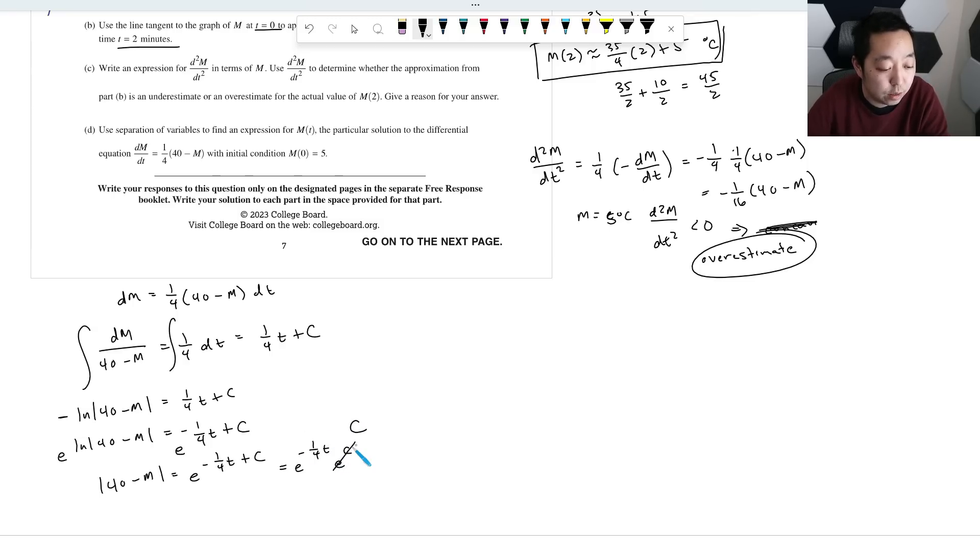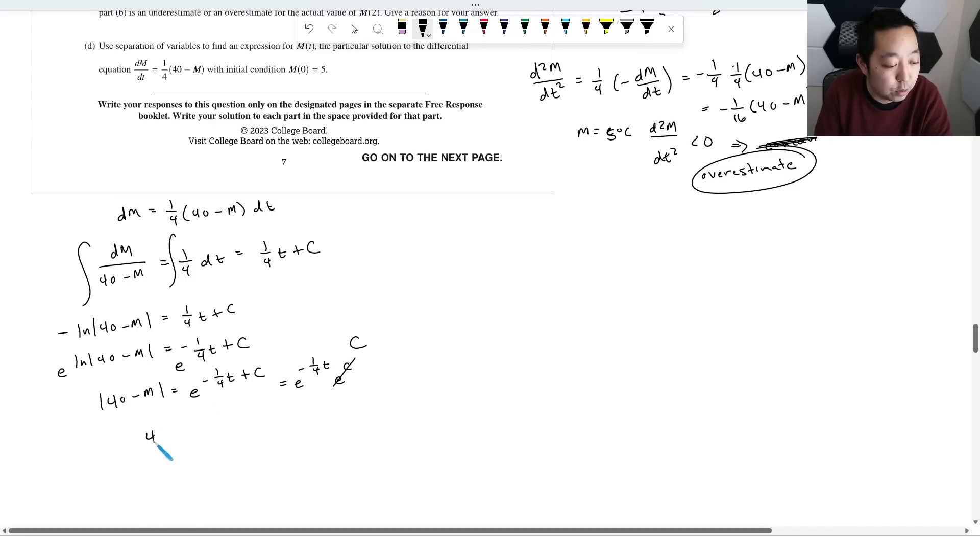Then you can write that as E to the negative one quarter T times E to the C. E to the C is an arbitrary constant. You can make that C. If you make C positive or negative, it allows you to remove the absolute value of the sign because now you can say C is negative. That will include both possibilities. So it'd be C E to the negative one quarter T. And so then you can solve for M. It's M is, move it over, it'd be 40 minus this or 40 plus C E to the negative one quarter T. It doesn't really matter what that C is because we're going to solve for it.